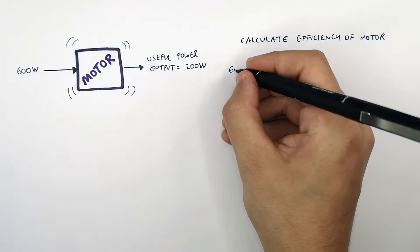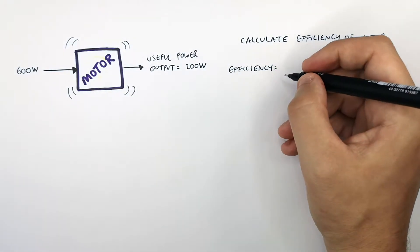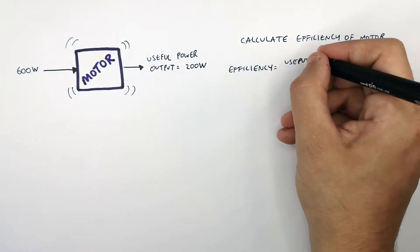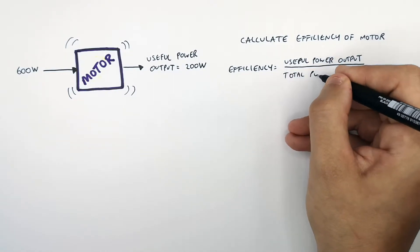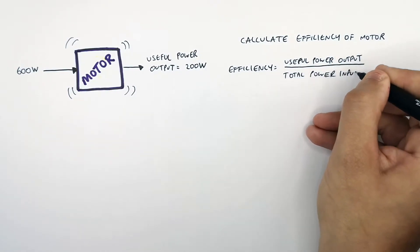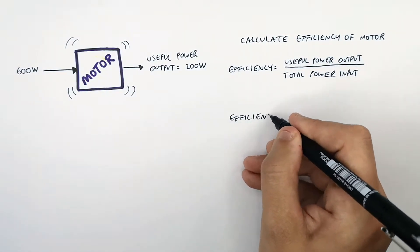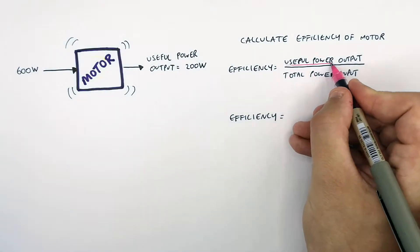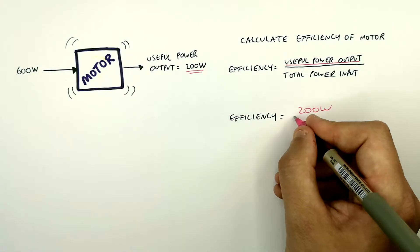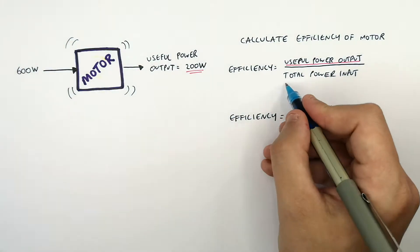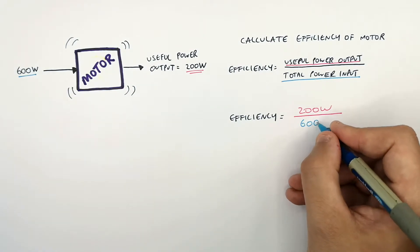To recall the efficiency equation: efficiency equals useful power output divided by the total power input. So efficiency equals the useful power output of 200 watts divided by 600 watts, which is the total power input.